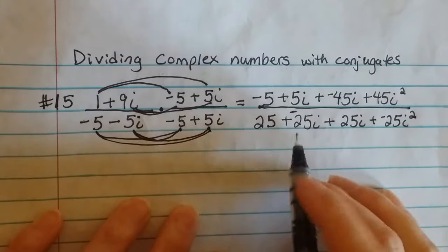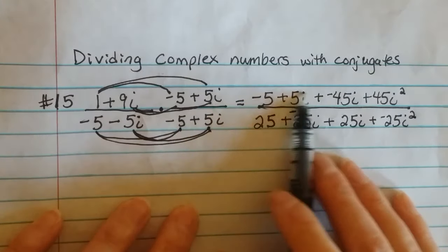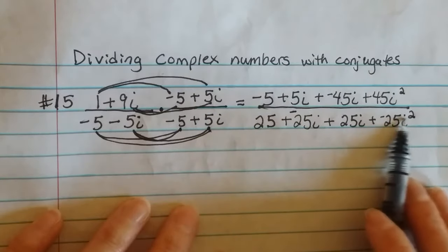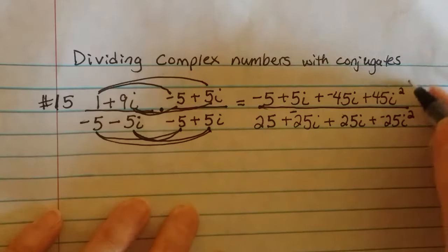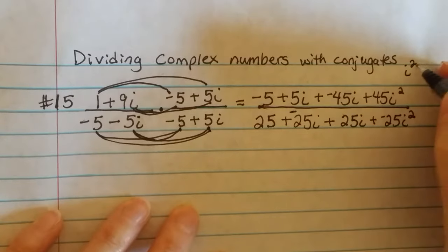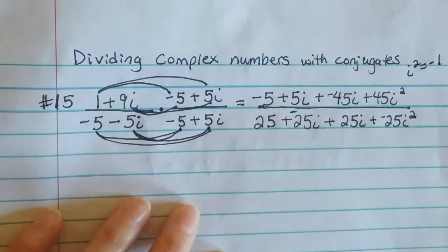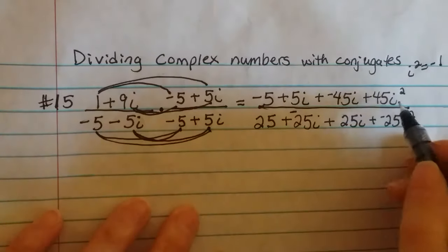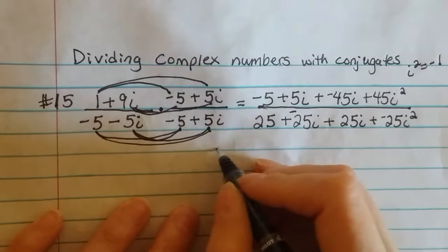And then I need to go through and individually I need to simplify the top and then simplify the bottom. And you need to recall that i² equals -1. So anytime I see that, I need to plug that in for the i squares.